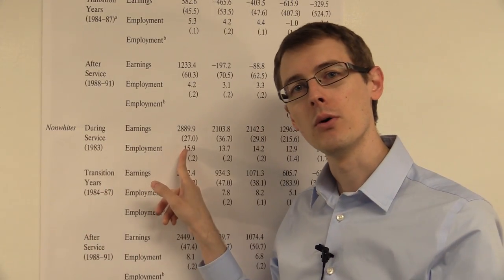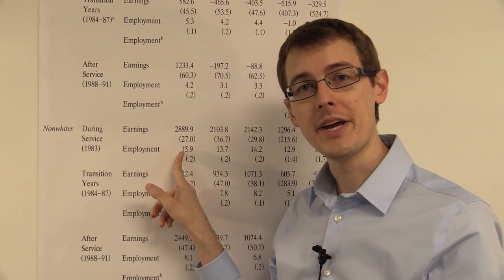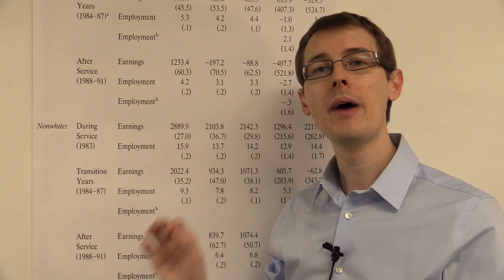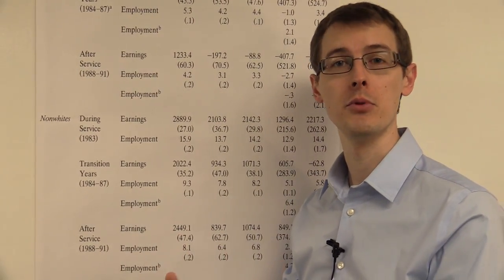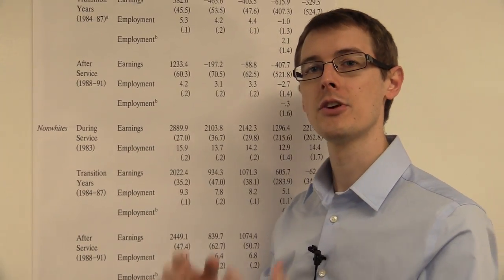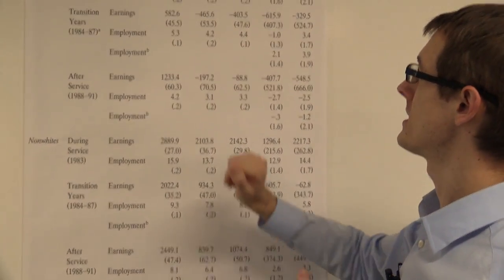We already know that we might be worried about the selection problem, and these are not actually causal effects. So following Angrist's identification strategy, he's going to use matching or regression estimates to control for other variables that might affect your earnings. So let's see what he gets when he does that.